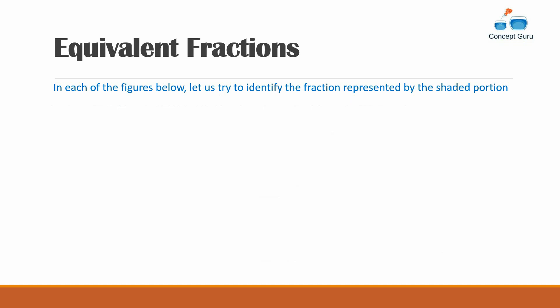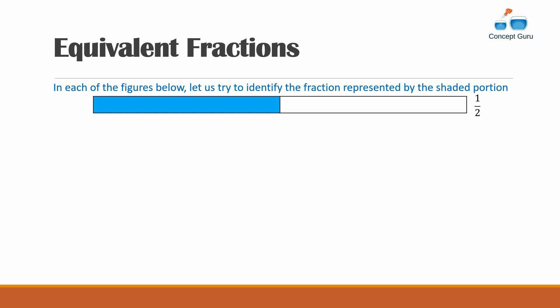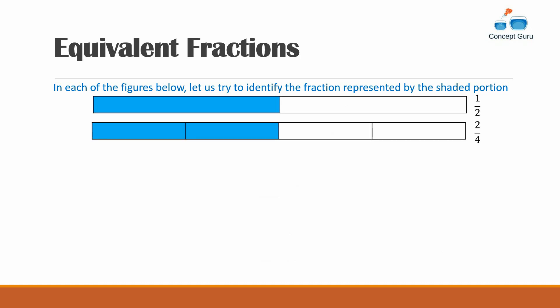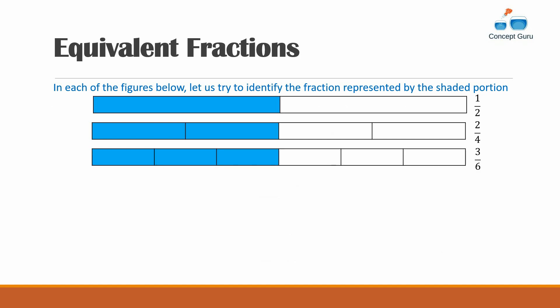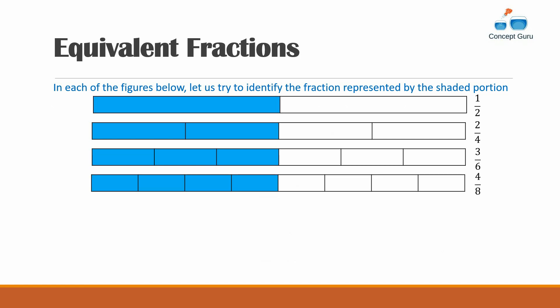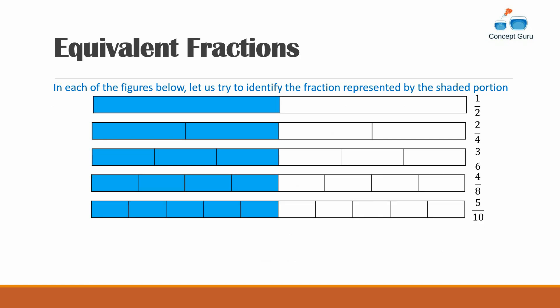In each of the figures below, let's identify the fraction represented by the shaded portion. In the first one, one part is shaded out of two, so it is one over two. In the second, two shaded portions out of four gives two over four. The third is three over six, the fourth is four over eight, and the next is five over ten.